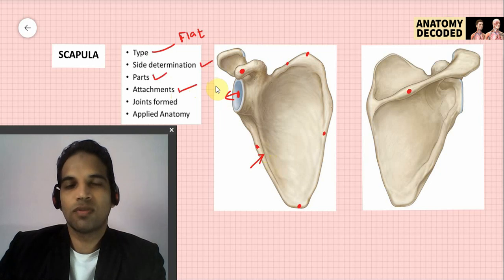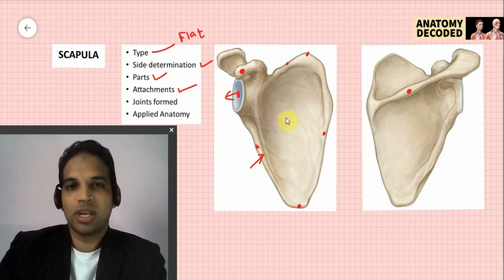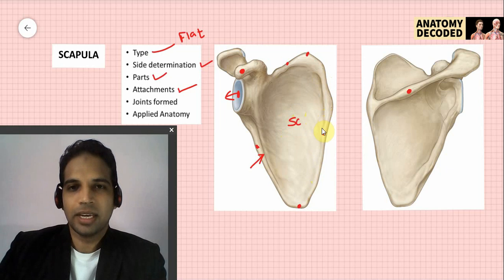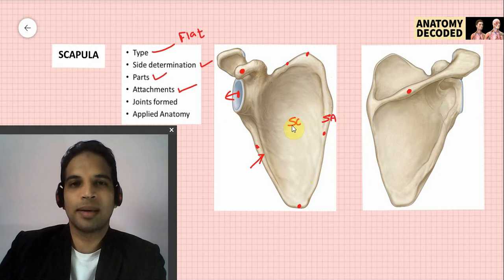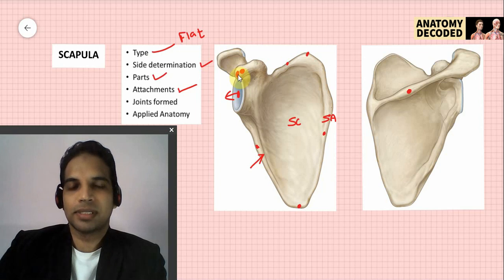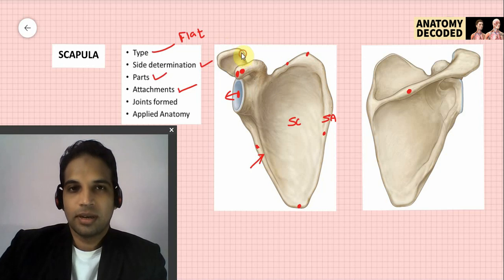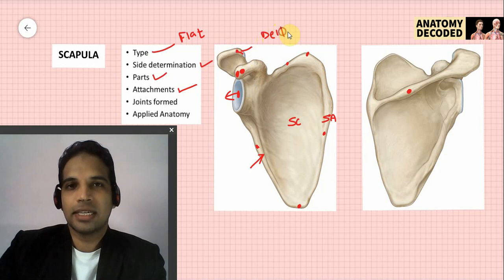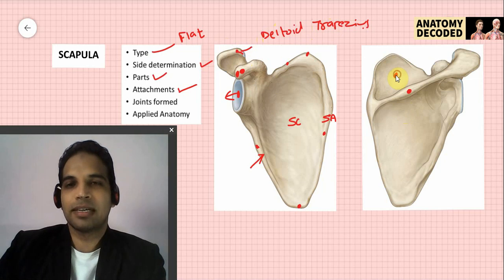For muscle attachments of the scapula, using a formula of twos: in the subscapular fossa anteriorly the muscle is subscapularis; along the medial border anteriorly is serratus anterior. Along the tip of the coracoid process are coracobrachialis and the short head of biceps. Along the acromion process are deltoid and trapezius.